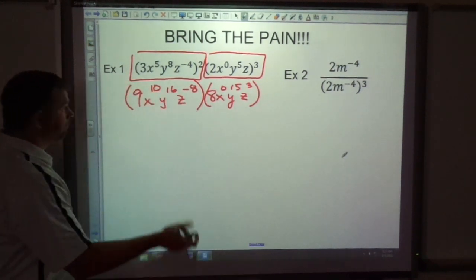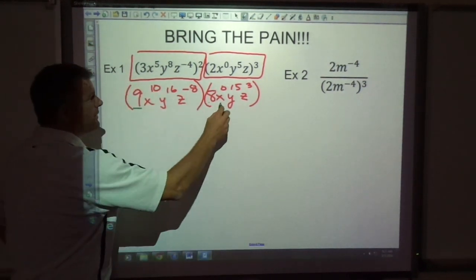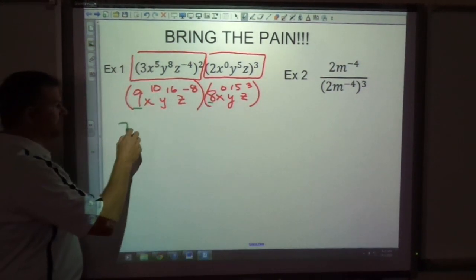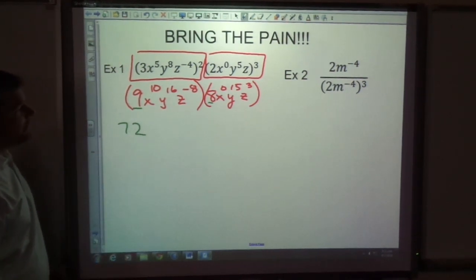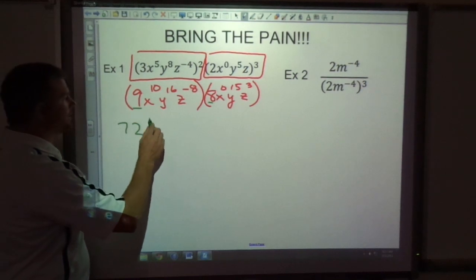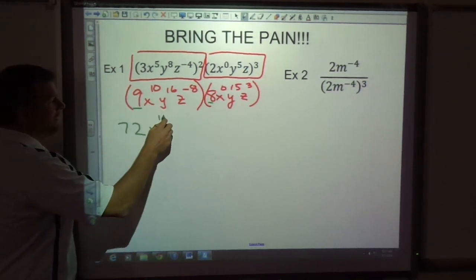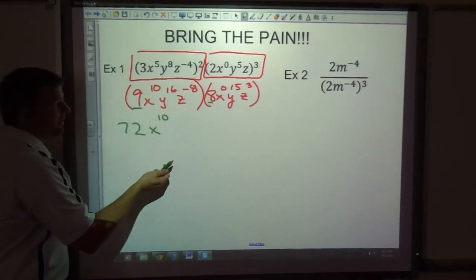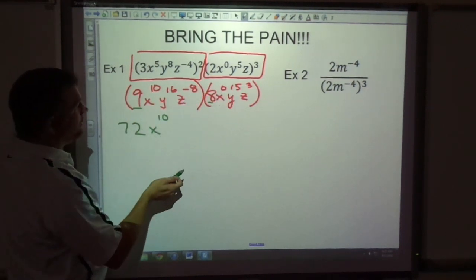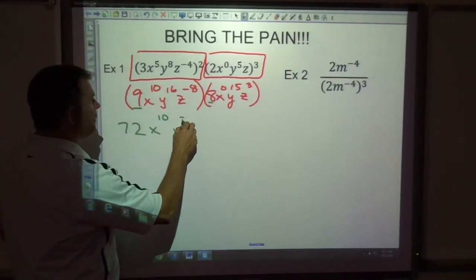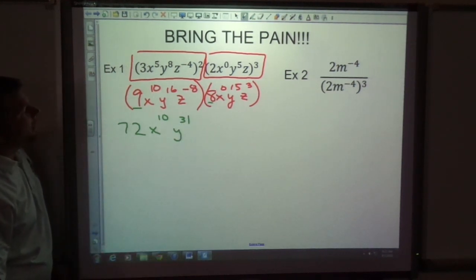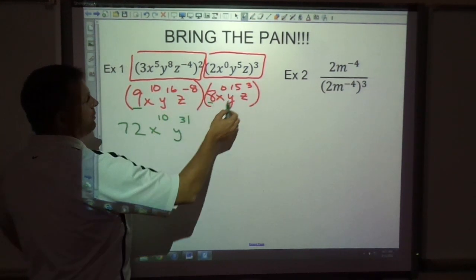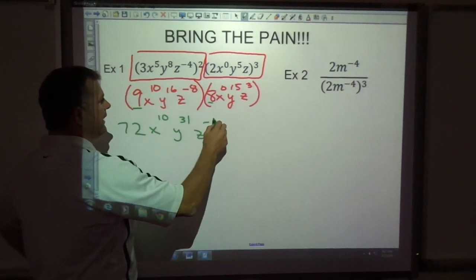Now I'm left with multiplication. So I'll just multiply the coefficients, 8 and 9, that's 72. The exponents, I know when multiplying on common bases, I add the exponents. So x 10 plus 0 is still 10. See it didn't matter if I just didn't even write this, it's still going to be 10. Y 16 and y 15 is y 31. And z to the negative 8 plus 3 is going to be negative 5.